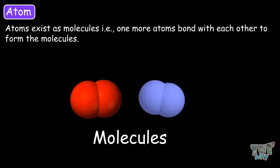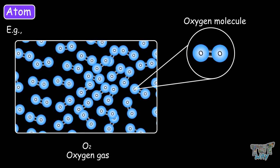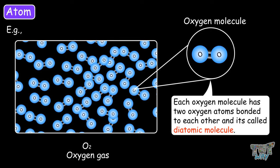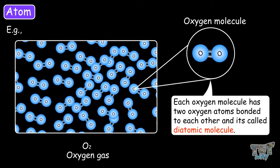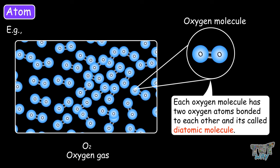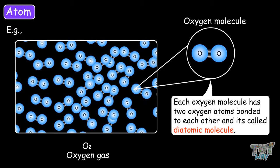Atoms exist as molecules — that is, one or more atoms bonded together to form molecules. For example, oxygen gas is made up of oxygen molecules, where each oxygen molecule has two oxygen atoms bonded to each other, and that is called a diatomic molecule.